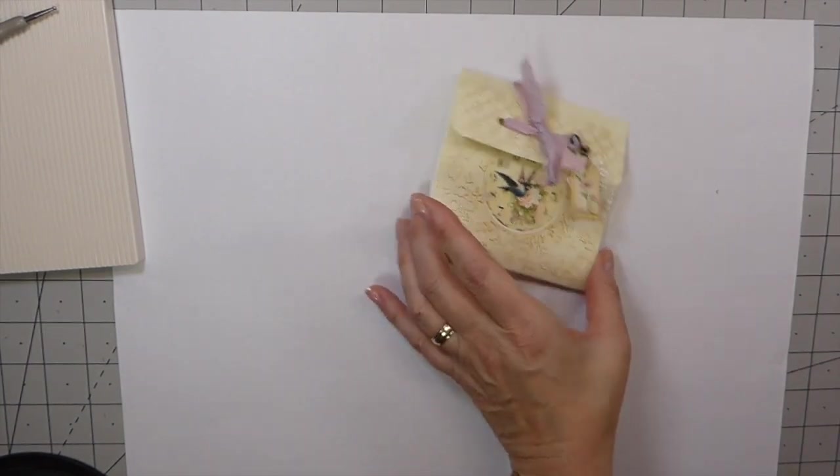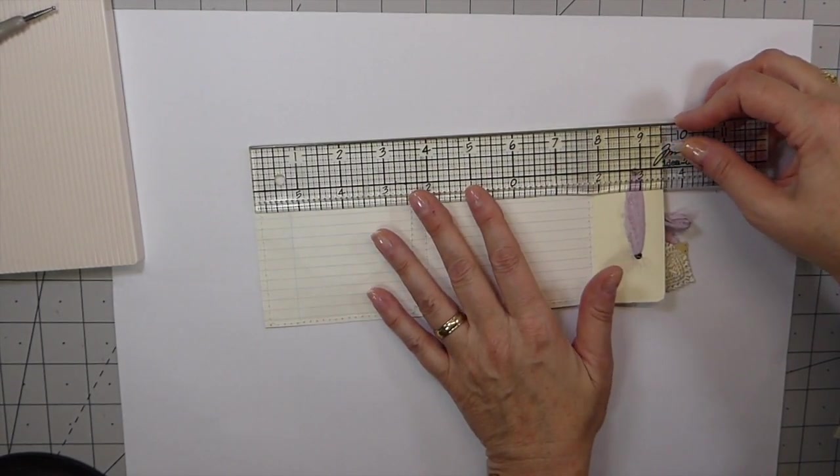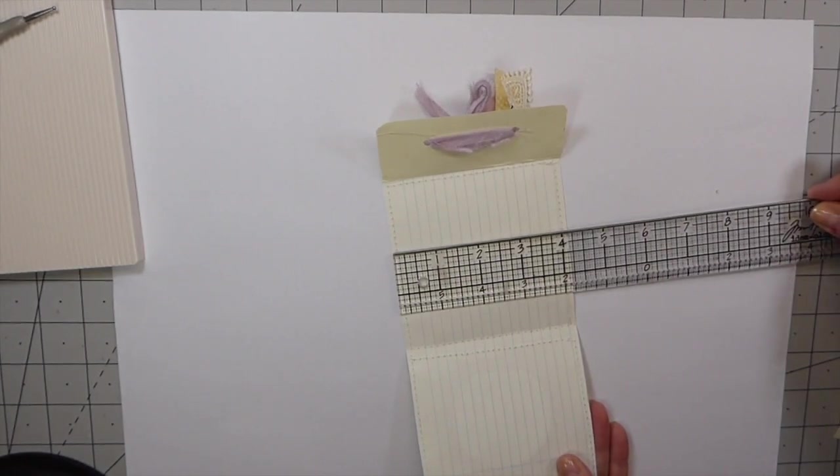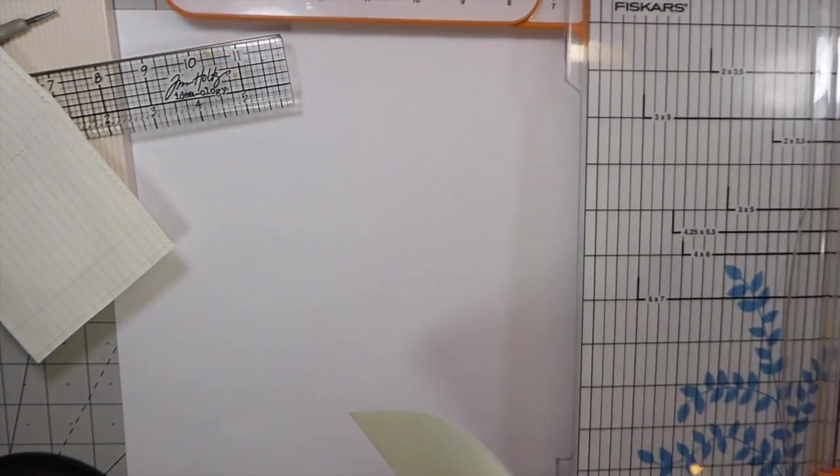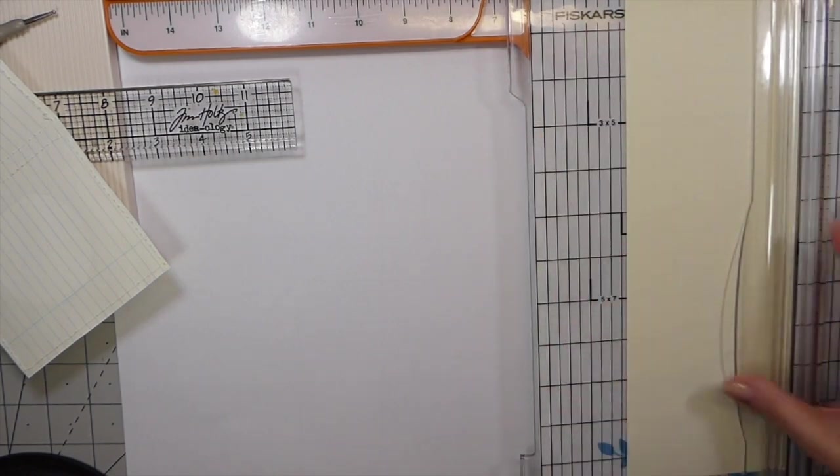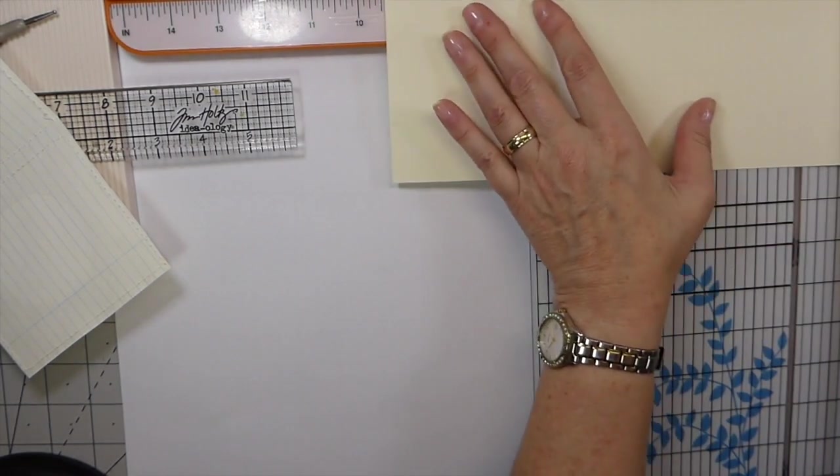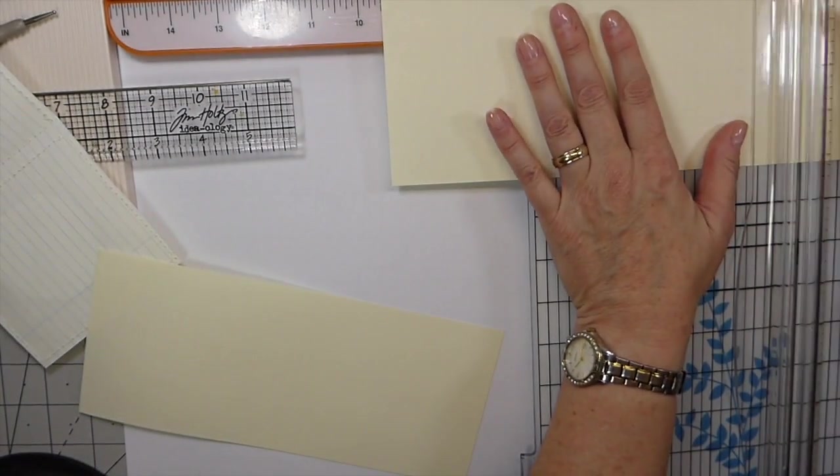So let's just get started here. It's pretty basic supplies. I try to keep my projects so you don't have to buy anything, hopefully you've got all this in your stash. First thing you want to do is cut this down to four and an eighth by nine and a half. The reason I've done that at four and an eighth is so that I could get two out of a sheet and it still fit within the journals. And then nine and a half.